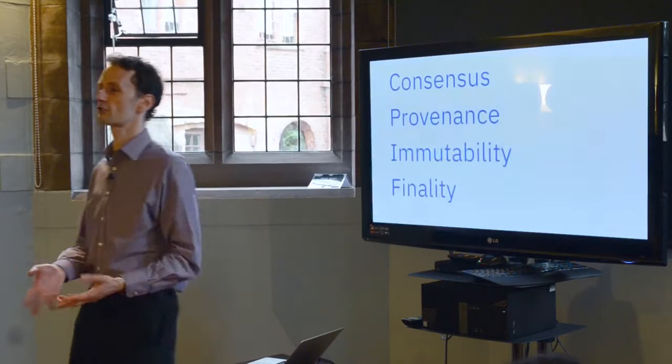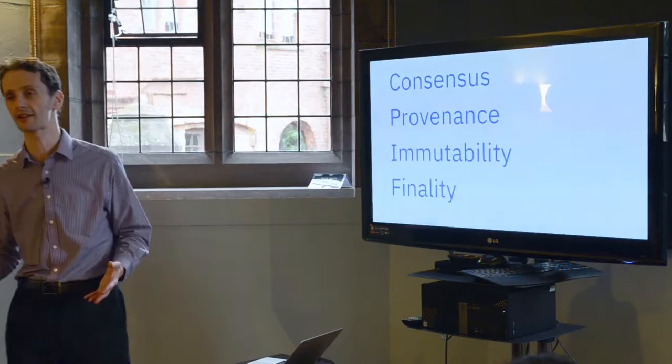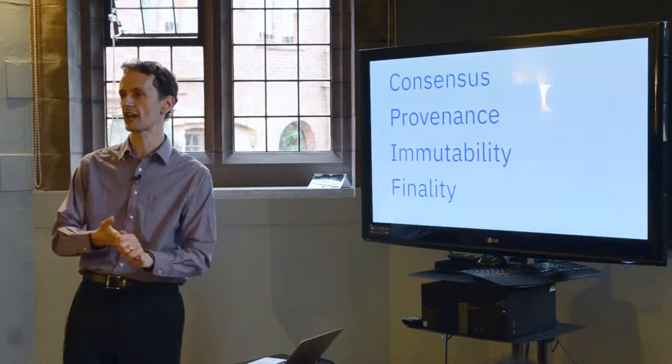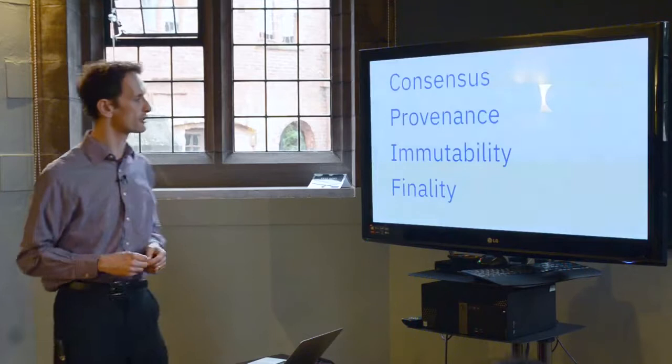The third one is immutability. A blockchain is an append-only data structure. You can't go and insert transactions into the middle of a blockchain. You can't go and modify transactions once they've been committed. You can't go and delete transactions, which is why it's great for auditing, for transparency. And the data structure that we use, it's a variant of a hash chain that includes some merkle trees in there. That gives us immutability over a distributed network.